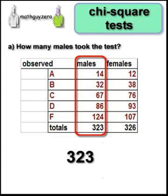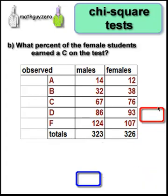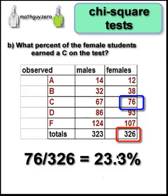The second question is: what percent of the female students earned a C on the test? How many female students were there total? That's your denominator. And how many got a C? So 76 out of 326 comes out to 23.3%.